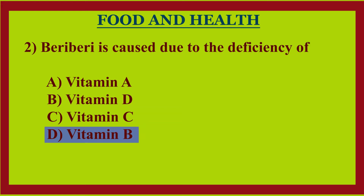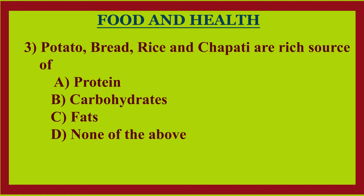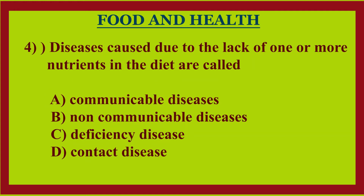Third question: potato, bread, rice, and chapati are a rich source of — option A: protein, option B: carbohydrates, option C: fats, option D: none of the above. Answer: option B, carbohydrates.